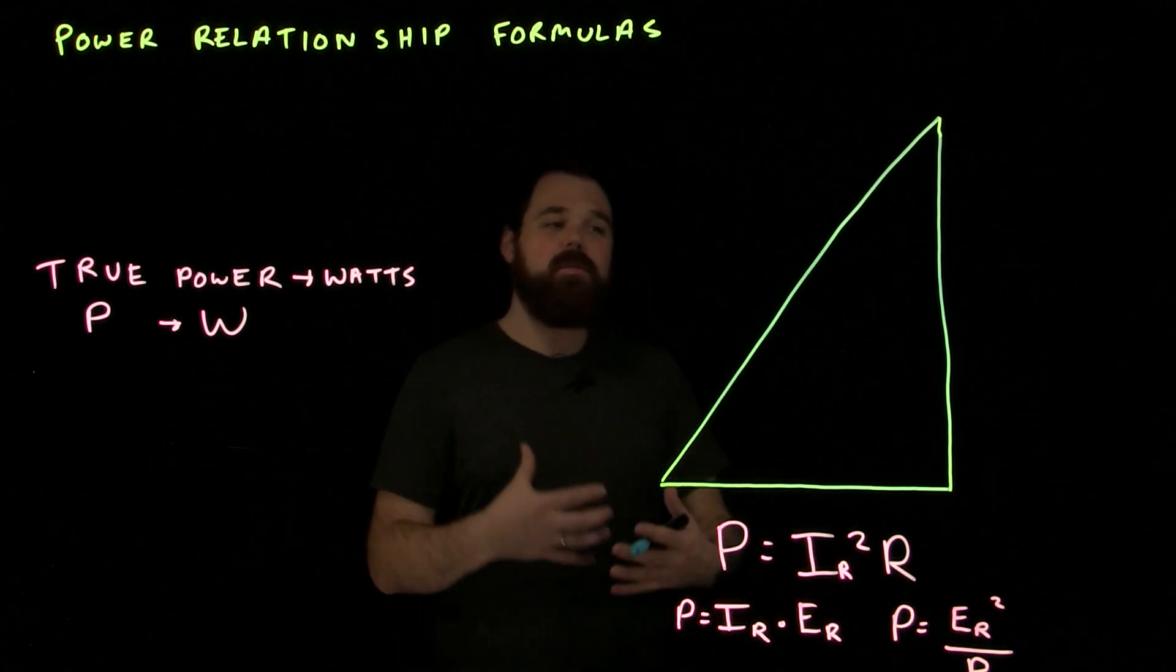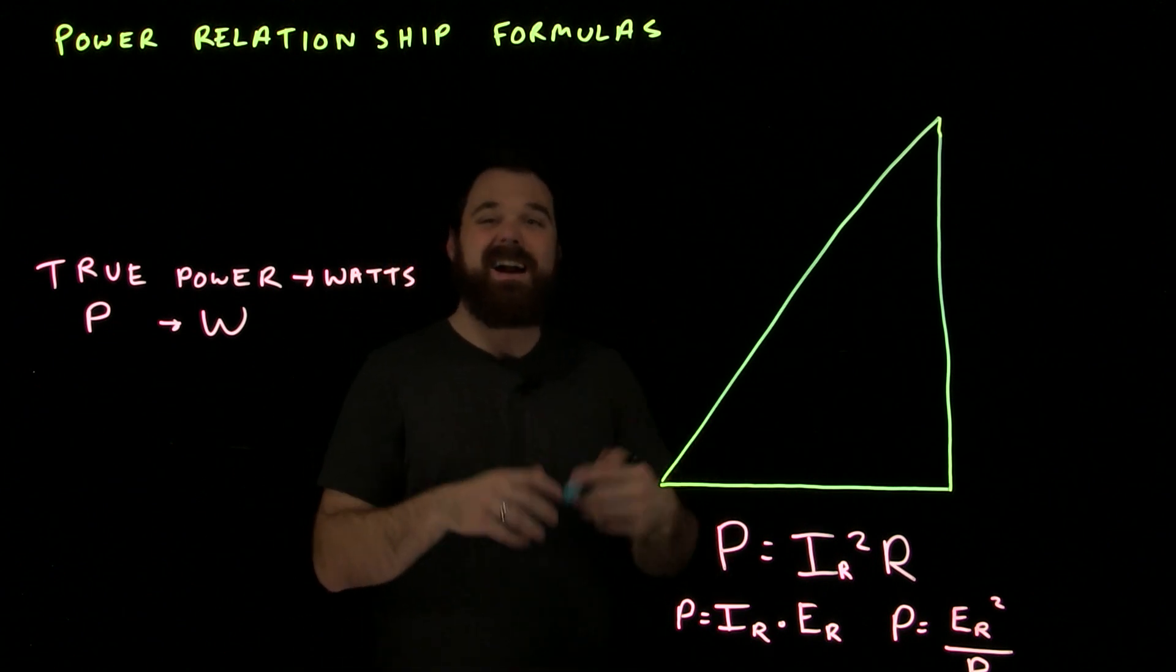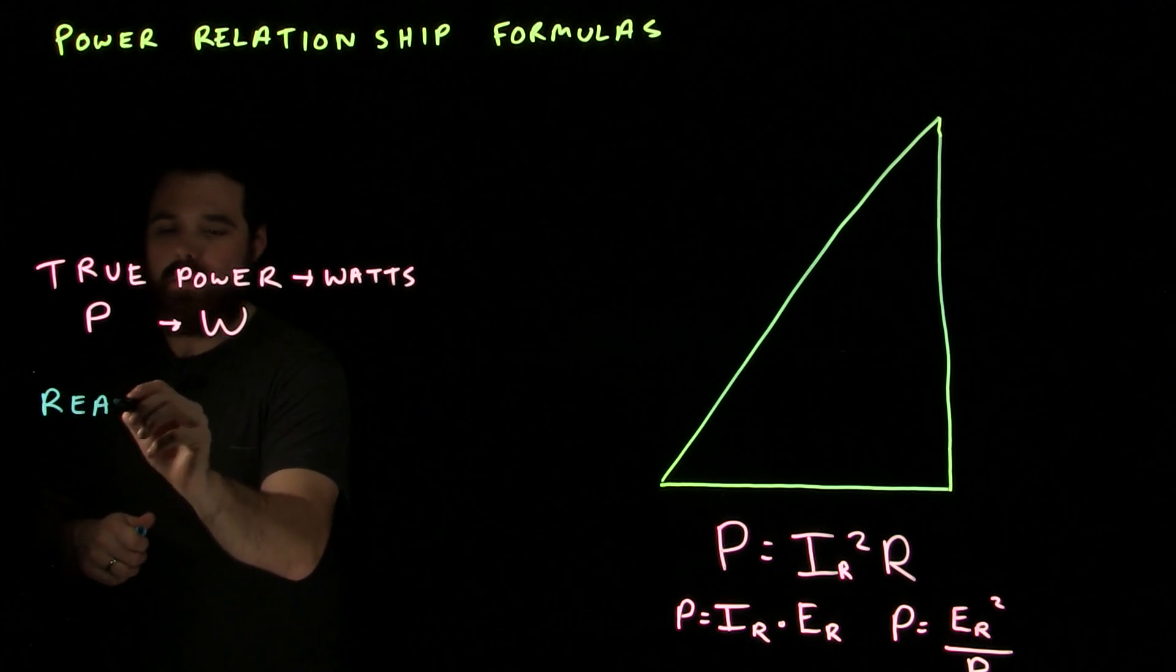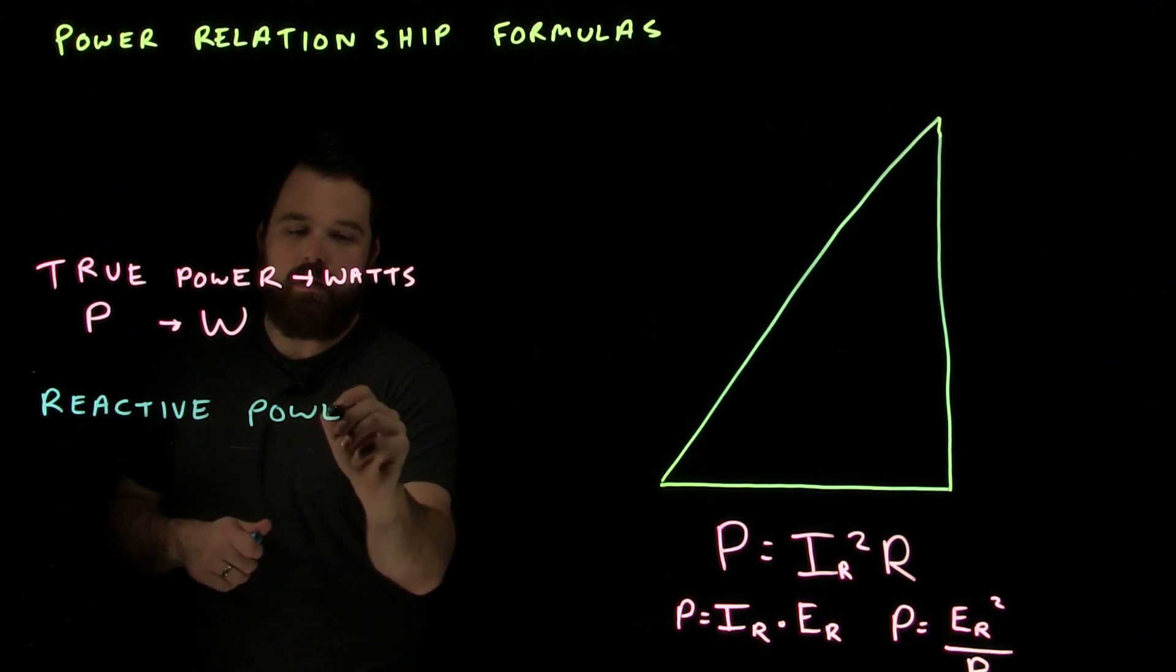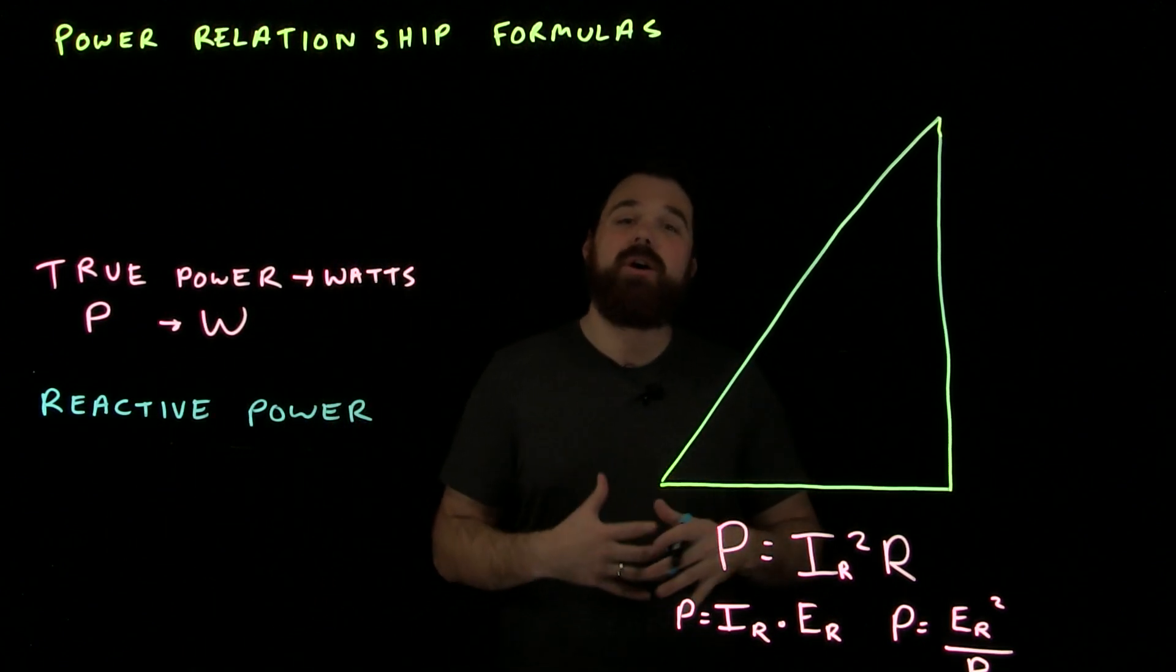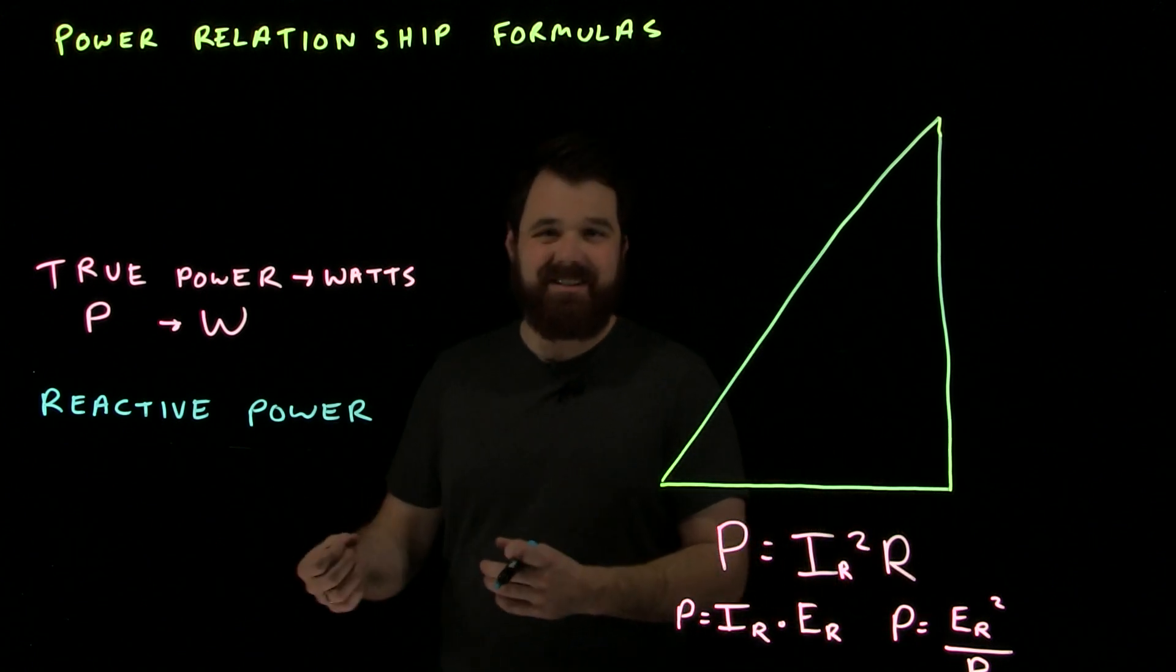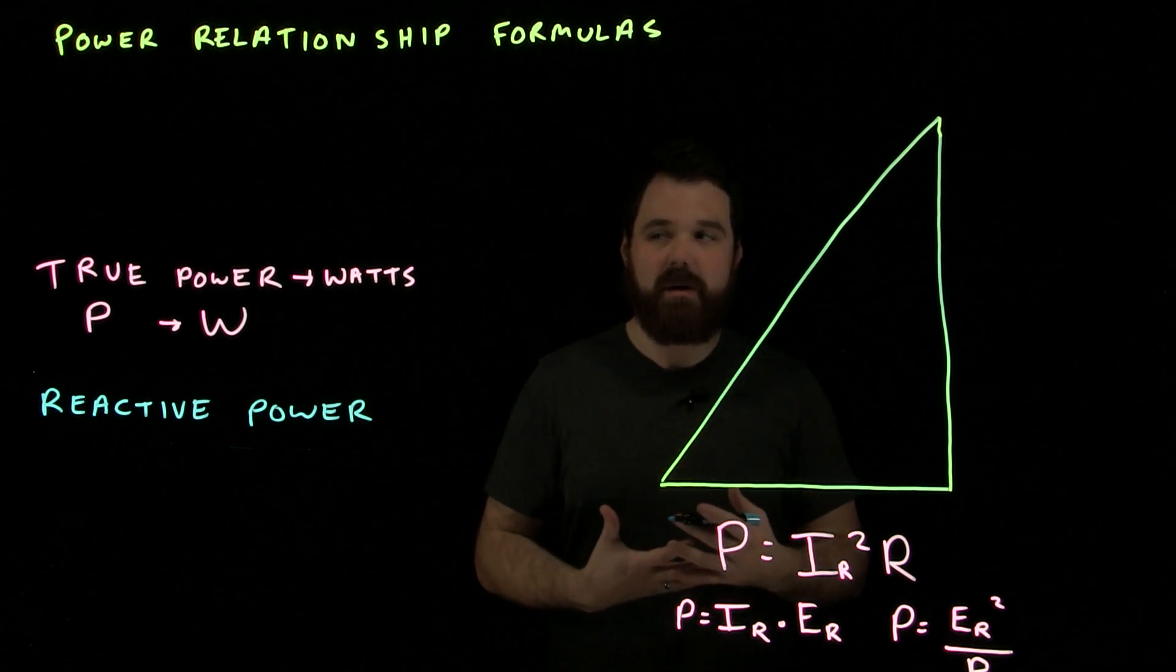What we start talking about now when we're adding capacitors and inductors into a circuit is we're talking about reactive power. Reactive power is actually occurring 90 degrees out of phase from our true power, and it's due to inductance, and it's due to capacitance in a circuit and voltage or current flowing through that inductor or flowing through that capacitor.